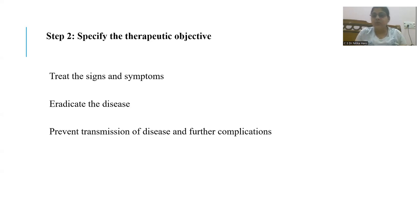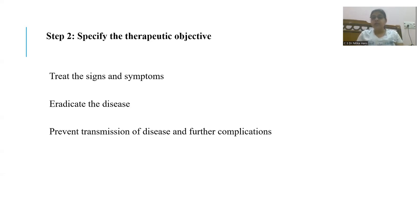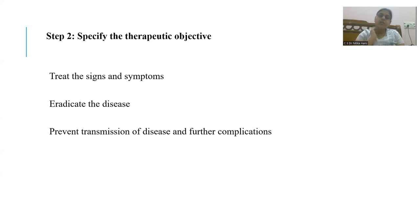Trophozoites can also invade the intestinal lumen and convert to cysts. These cysts pass out and create a carrier state, transmitting the disease from the carrier to a normal patient. So there is both a carrier state and disease caused by trophozoites forming ulcers in the intestinal mucosa. These further complications can also be treated.